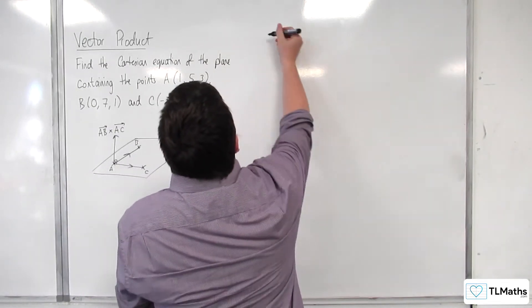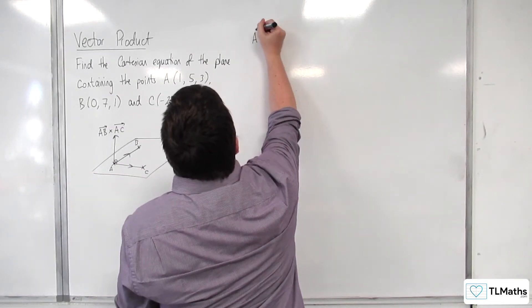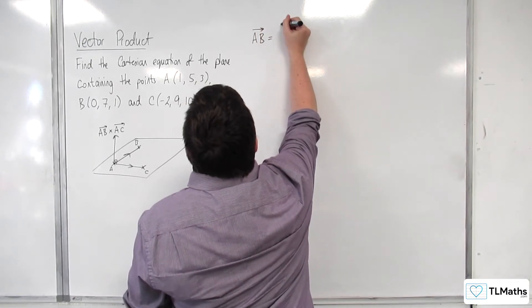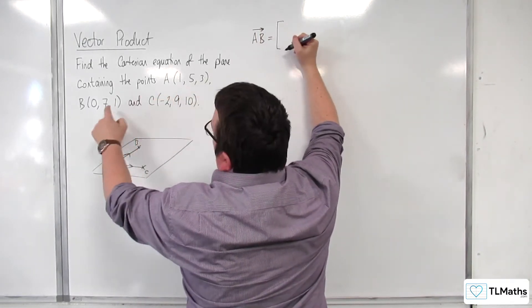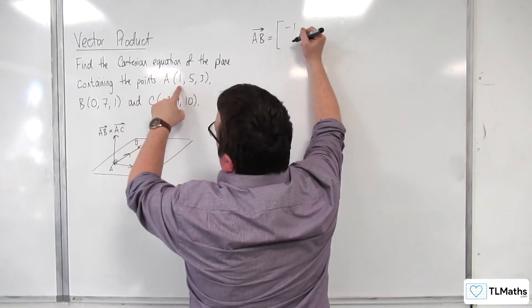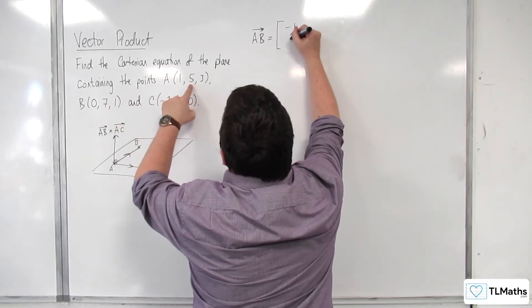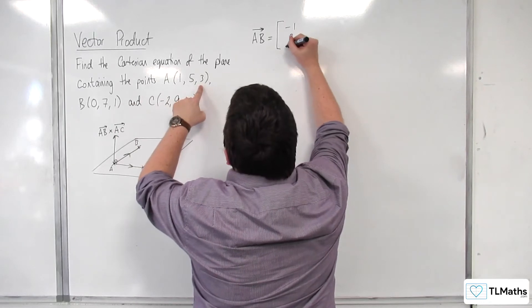So the first thing I'm going to do is work out AB, which is going to be OB minus OA. So 0 take away 1 is minus 1, 7 take away 5 is 2, 1 take away 3 is minus 2.